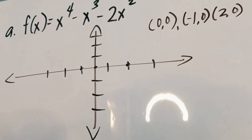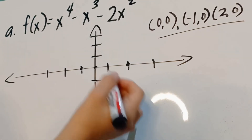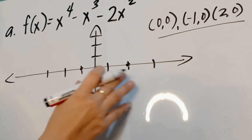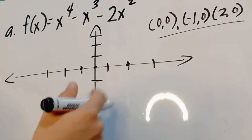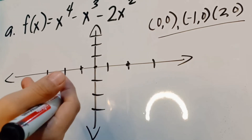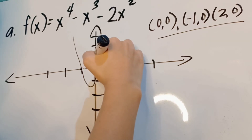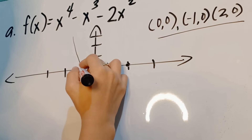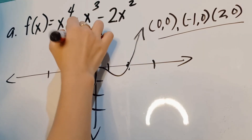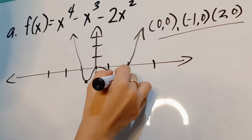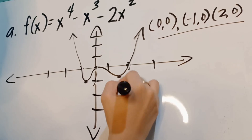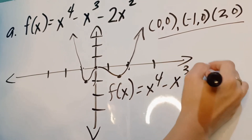Sketching the graph: plot the intercepts at (negative 1, 0), (0, 0), and (2, 0). The y-intercept is 0. With 3 turning points and end behavior rising on both sides, we have rising on the left and rising on the right. The graph has 3 turning points. This is the sketch of f(x) = x⁴ - x³ - 2x².